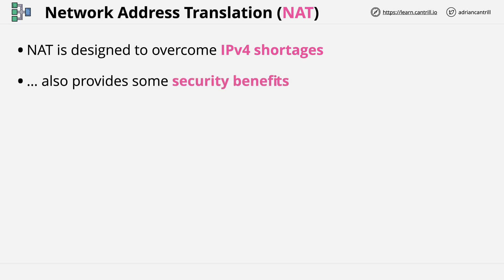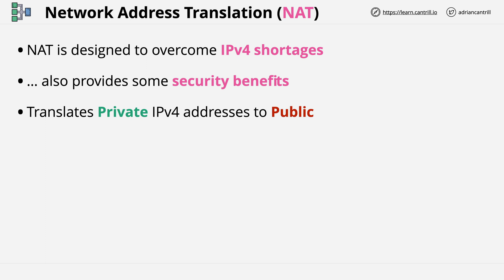There are actually multiple types of NAT, which I'm going to cover. All of them translate private IP addresses into public IP addresses so that packets can flow over the public internet, and then translate back in reverse so that internet-based hosts can communicate back with these private services. That's the high-level function of NAT, but each type handles this process differently.